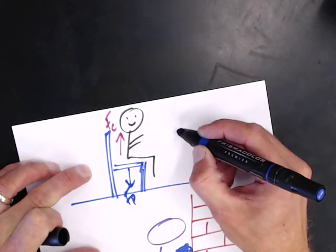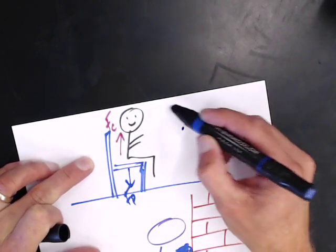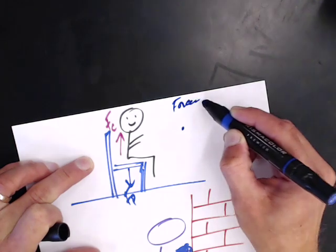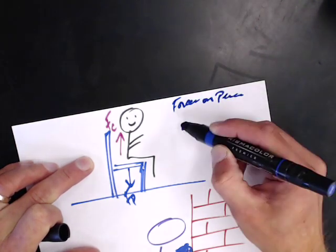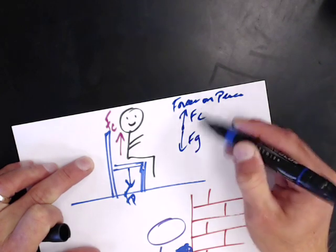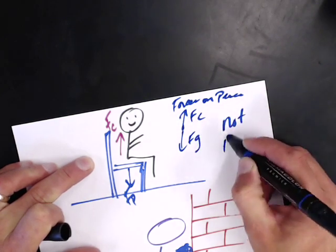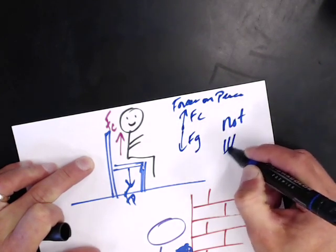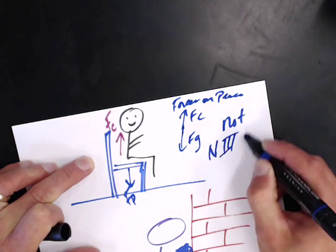So here, if we look at the forces that are on the person, you have the force of the chair going up and you have the force of gravity pulling it down. But these are not a Newton's third law set.